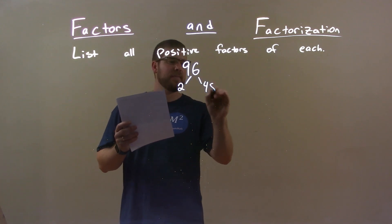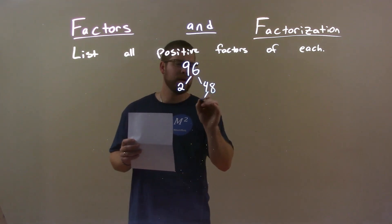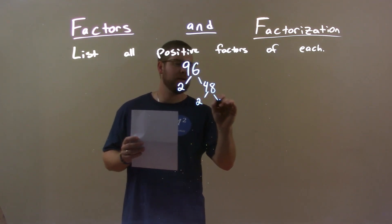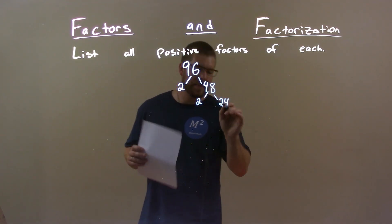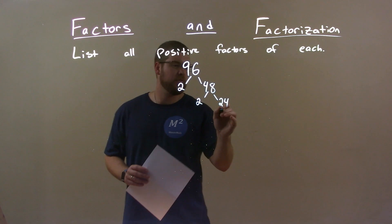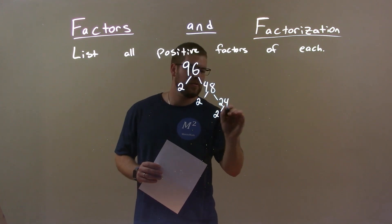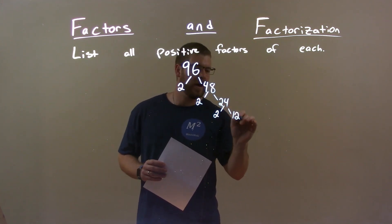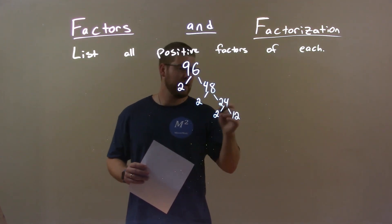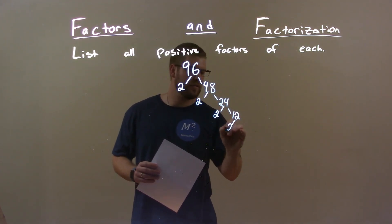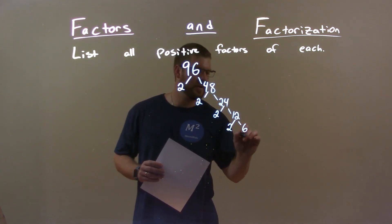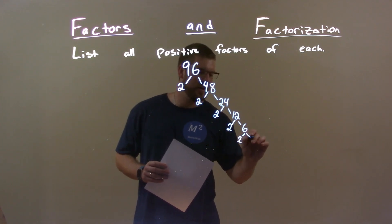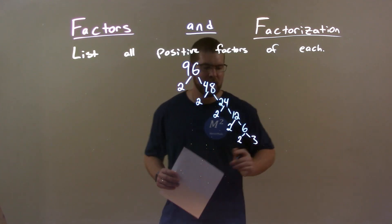That's 2 and 48. And 48 is 2 and 24. Then 24 is 2 and 12. And 12 is 2 and 6. And 6 again is 2 and 3.